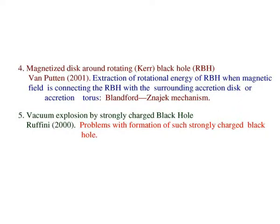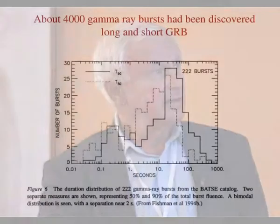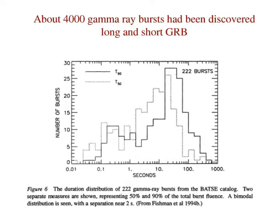Among about 4,000 gamma-ray bursts observed — maybe more, perhaps 10,000 several years ago — these are divided into two groups: short gamma-ray bursts and long gamma-ray bursts, which may have different origins. At least part of these short gamma-ray bursts are definitely connected with quite another object: soft gamma repeaters — specifically giant bursts from soft gamma repeaters.